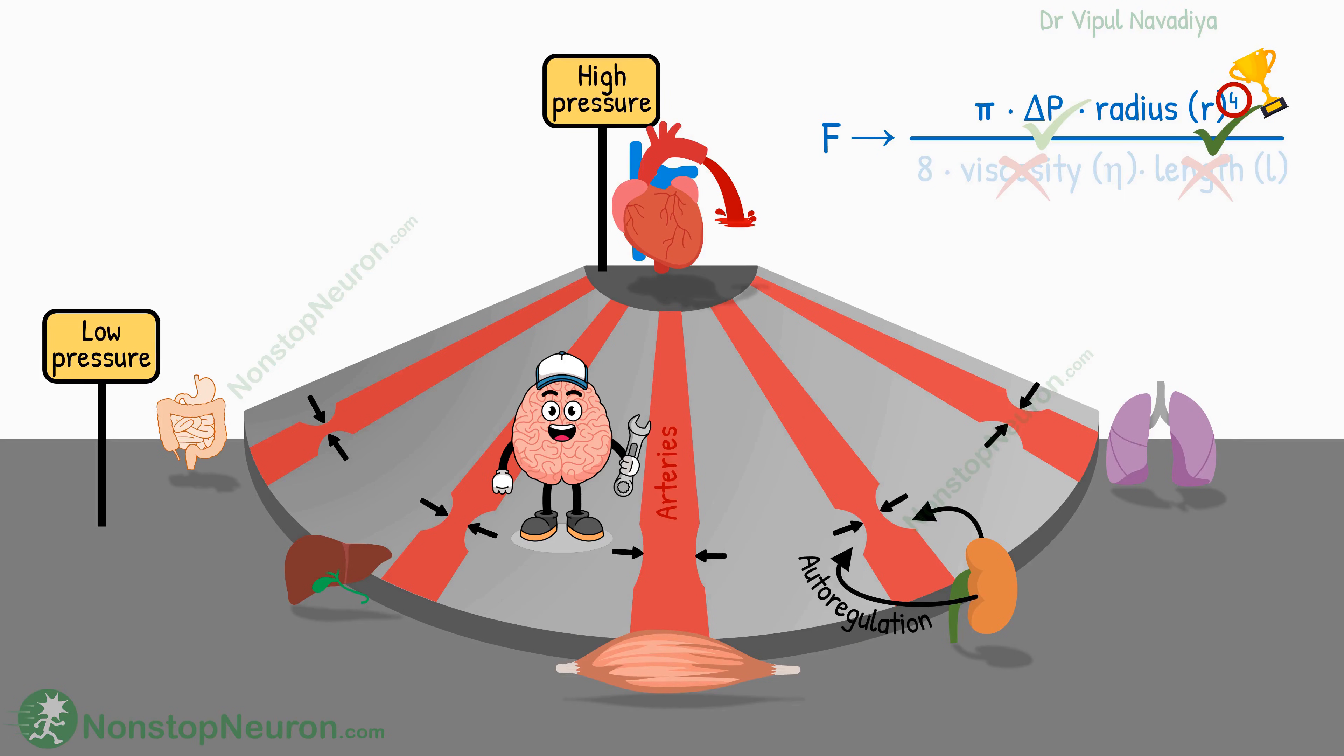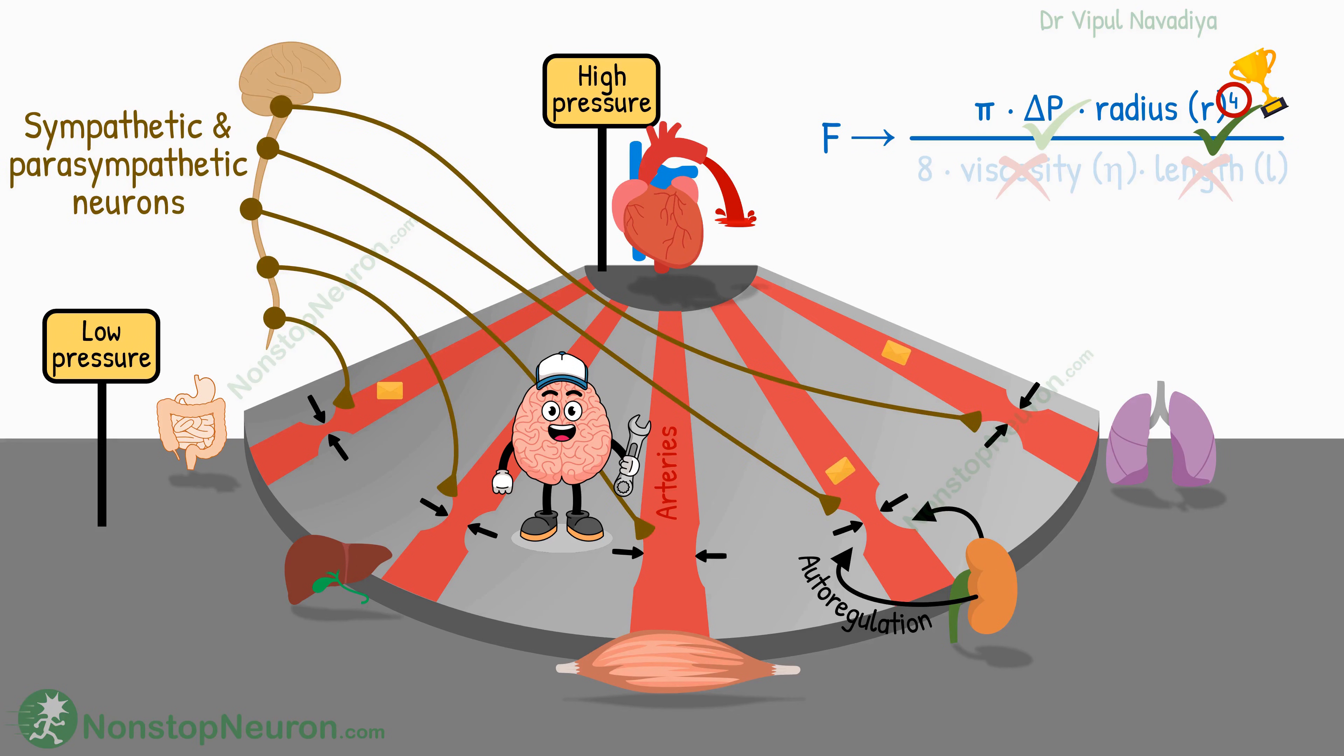To regulate the radius of vessels, we have many control systems like sympathetic and parasympathetic innervation, certain circulating hormones, and even autoregulation by the organ itself, as we just saw. They cause vasoconstriction, or dilatation, as needed. Thus, the radius of vessels is a wonderful tool when used by our body's normal control systems.